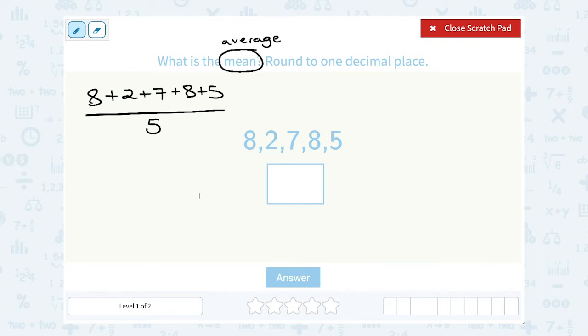Alright, so 8 plus 2 plus 7 plus 8 plus 5 - that adds up to a total of 30. And then I still have to divide that total by 5 since there were 5 numbers. 30 divided by 5 gives me 6. So that means the mean or average is 6.